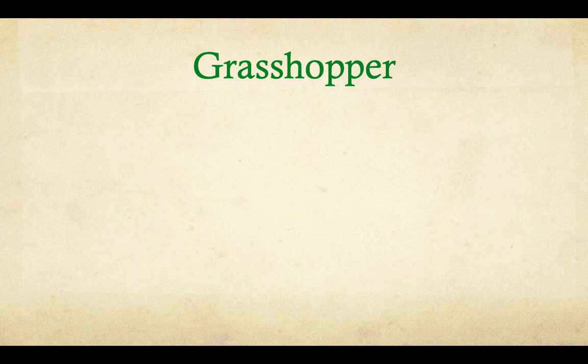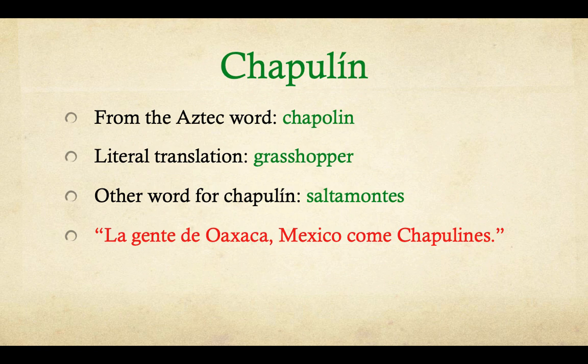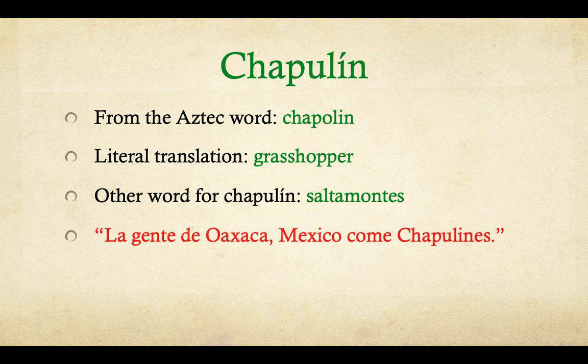Grasshopper. 'Chapolin' comes from the Aztec word 'chapolin.' The translation is grasshopper. Another word for chapolin is 'saltamontes,' which is kind of interesting. 'La gente de Oaxaca, México come chapolines.' About saltamontes: 'salta' comes from the verb 'saltar,' which means to jump, and 'montes' is similar to mountain — so it's like 'mountain jumper.' They probably can't jump that high, but it's pretty cool.